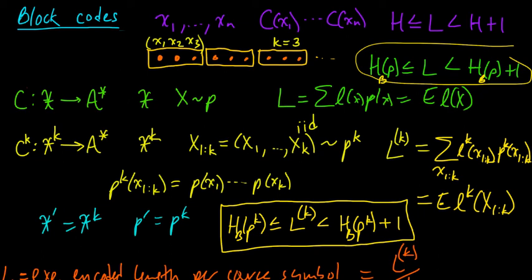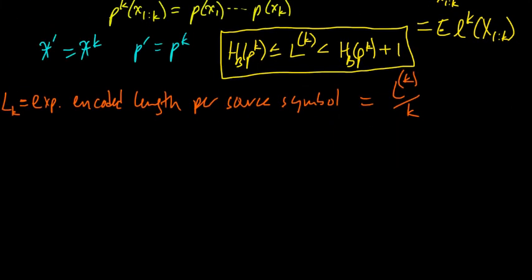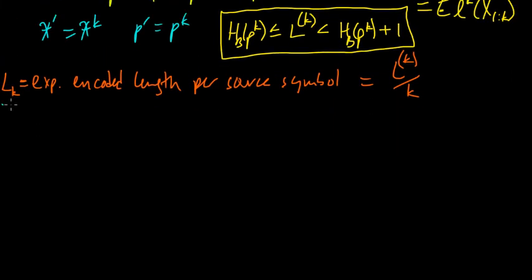We are rapidly approaching our first major milestone of information theory, the source coding theorem. One result that we'll need for the theorem is to get an expression for the entropy of the joint distribution of these iid random variables. So in this video we're going to do that calculation.